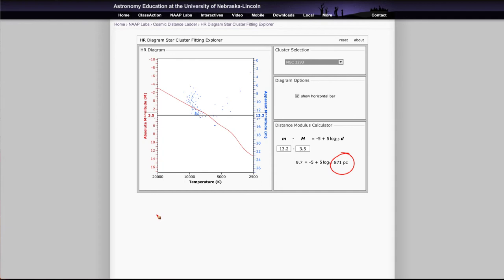And that will then give us the distance is calculated for us at 871 parsecs. So again, you don't have to do the calculation. You just have to put your two numbers in here using that horizontal bar. So that's all you do to determine the distances on this one.